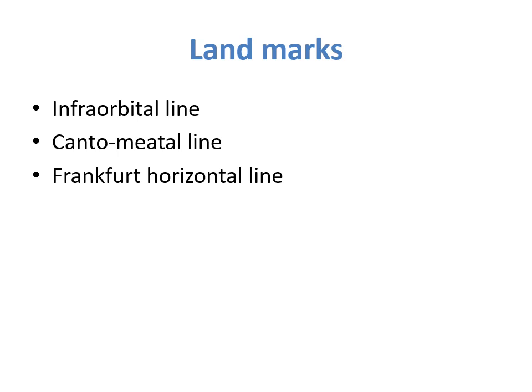Extraoral radiographic techniques depend on specific landmarks. These landmarks guide cassette placement, central ray direction, and patient positioning. The key landmarks are: the infraorbital line, the canthomeatal line, and the Frankfurt horizontal line.